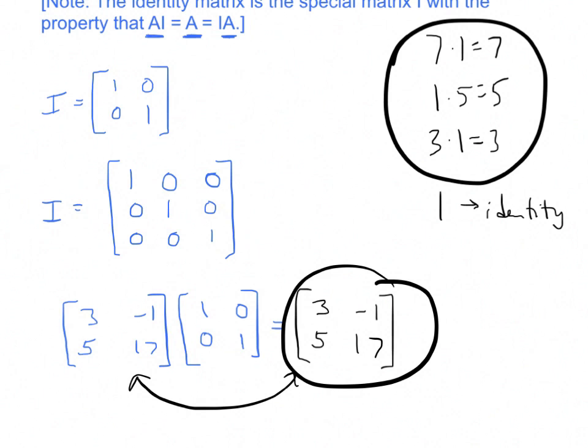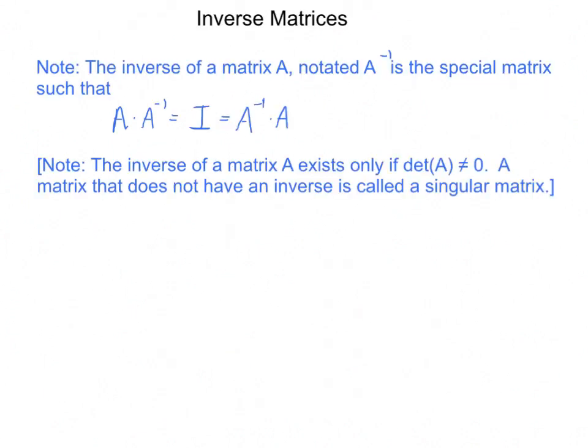So that's basically all I have to say about the identity. It's a special matrix. You need to know about it. So the rest of this lesson is going to be about inverses. The inverse of a matrix A, which is notated as A with a little negative 1 power on it like this, is a special matrix such that when you multiply the inverse by the original function, you get back the identity.